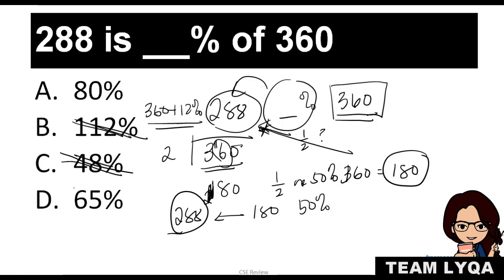So, what you could do would be this. Lahat ng numbers na mababa sa 50 percent ay hindi na pwedeng maging sagot. So, pag tinignan natin dito, hindi na sya pwedeng maging 48 percent. May process of elimination kasi mataas nga yung 288 kaysa sa 180. Eh, kalahati nga lang yung 180, diba? So, mas mataas pa sya dun. So, hindi sya pwedeng maging 48. So, yung 112 percent, hindi rin sya pwede kasi ang 112 percent, ibig sabihin meron ka ng isang 360 tas may sobra ka pang 12 percent. Eh, ang 288 is lower than 360.